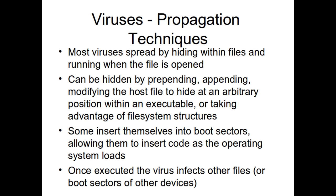Another technique is taking advantage of file system structures. On the NTFS file system — what you get when you format a disk in Windows — there is what's called an ADS, an alternate data stream. These are features not used at all within Windows unusually. It allows you to have content associated with a different stream but part of the same file. From Windows, you cannot see alternate data streams at all. They do not show up as increasing the size of the file, do not show up when you double-click to run it, and there is no way to see them without a special tool. That makes them a common way to hide a virus.